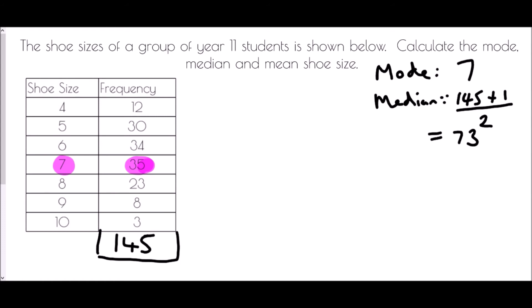We keep a running total: size 4s had 12 people; adding the fives gives 42; adding the sixes gives 76. Therefore the 73rd person must have been in the size six group, because we've gone beyond the 42nd but haven't yet reached the 76th. So our median is six.